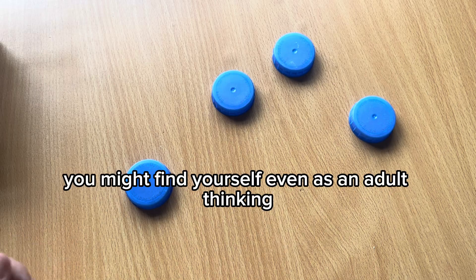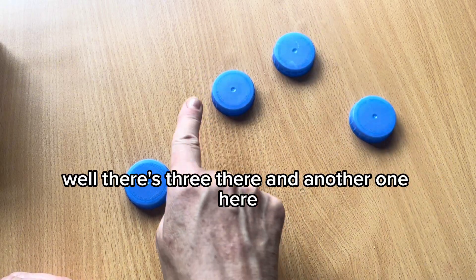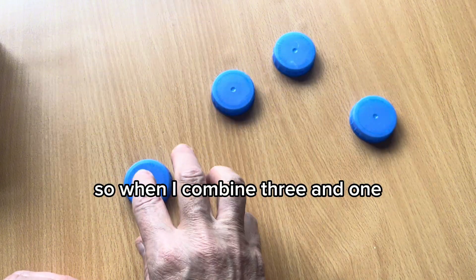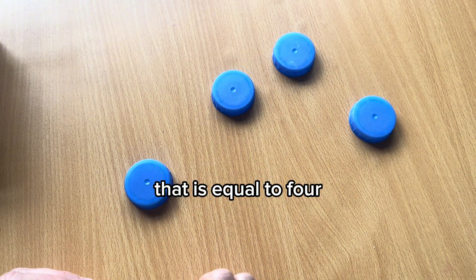you might find yourself, even as an adult, thinking, well, there's three there and another one here. So when I combine three and one, that is equal to four.